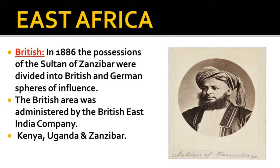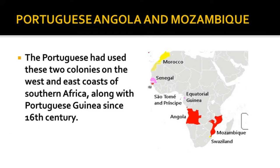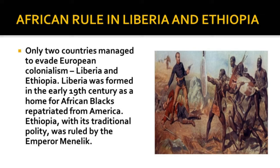East Africa: In 1886, the possessions of the Sultan of Zanzibar were divided into British and German spheres of influence. For the first few years the British area was administered by the British East India Company, but in 1895 the British government assumed authority and formed the East African Protectorate, which included Kenya, Uganda and Zanzibar. A large part of Uganda was made up of Buganda, a kingdom ruled by the Kabaka. The Portuguese had used Angola and Mozambique — on the west and east coasts of southern Africa — along with Portuguese Guinea since the 16th century. Only two countries managed to evade European colonialism: Liberia and Ethiopia. Liberia was formed in the early 19th century as a home for African blacks repatriated from America, while Ethiopia was ruled by Emperor Menelik.